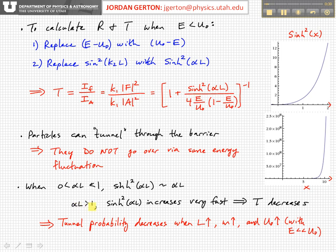But when alpha L is greater than 1, corresponding to when x is greater than 1 here, then the hyperbolic sine squared of alpha L increases very fast. This means that the transmission coefficient decreases because if this numerator is getting very big and the whole thing is inverted, then your tunneling probability is going to go down very fast.